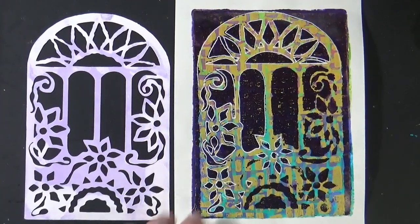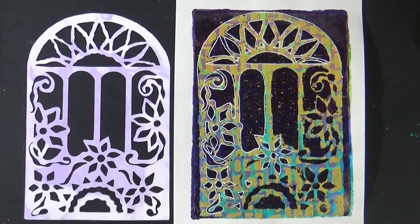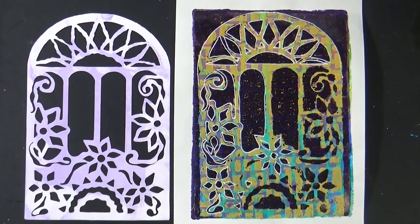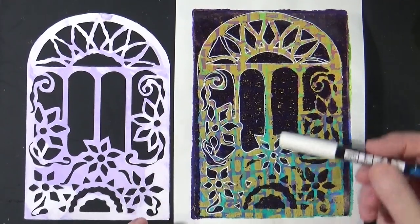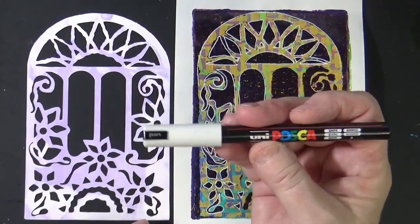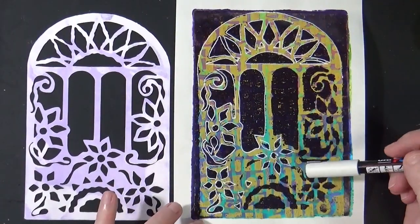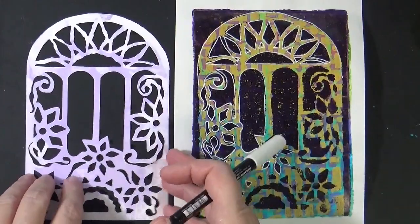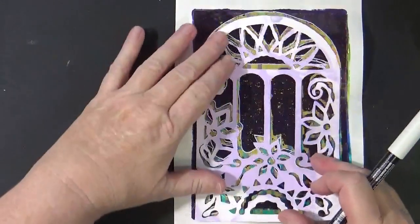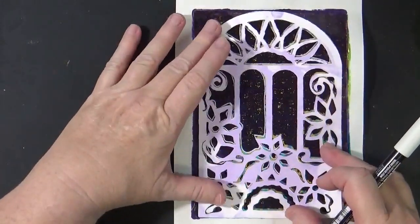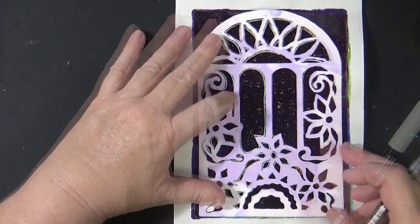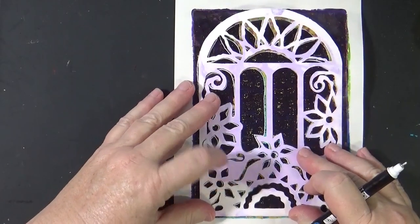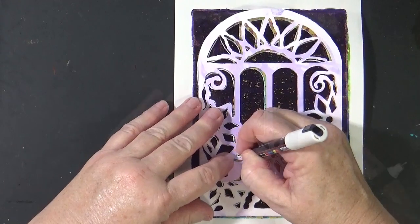When I began looking at this print, I thought that it would really benefit from a little bit of definition. So I'm using my white Posca pen and I'm outlining the details. Mostly I'm free handing it, but if you're not comfortable free handing, you can always put the stencil over the top like so, especially in some areas where I'm actually missing some parts and pieces.